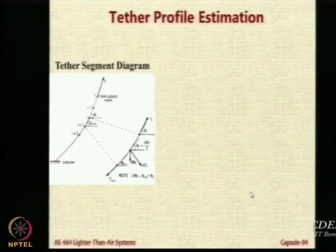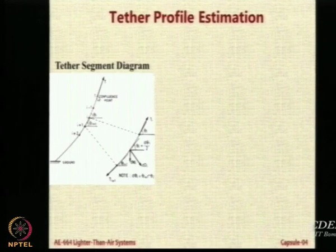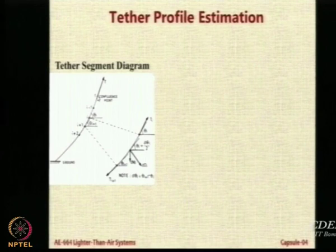The next thing is the tether profile estimation. Very briefly we will discuss it, although it is there in the paper in more detail. What we do is starting from the confluence point till the ground, we assume the tether to be broken into small components, let us say 1000 segments.